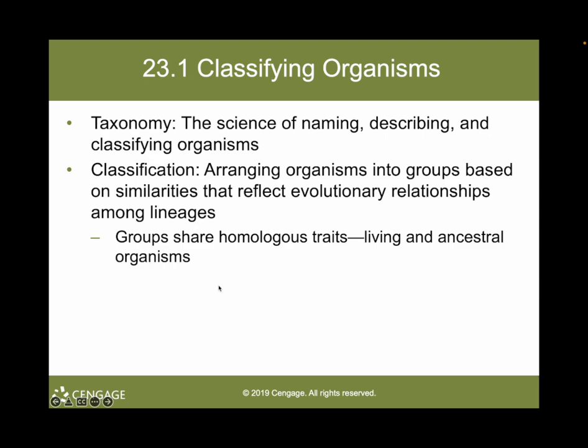In biology, the term classification means arranging organisms into groups based on similarities that reflect the evolutionary relationships among lineages. For hundreds of years, scientists have realized that certain groups of organisms share many features. Saying something like 'Species X is some kind of cat' tells us that Species X shares many features with other cats, ranging from details of a heart, skin, muscles, and skeleton, to molecular traits like amino acid sequences in particular proteins, nitrogenous base sequences in DNA, and even complex traits such as behaviors and aspects of their physiology.